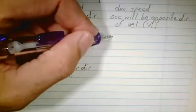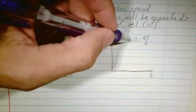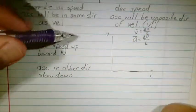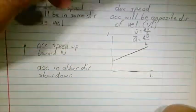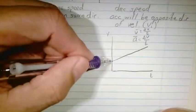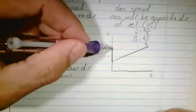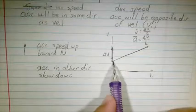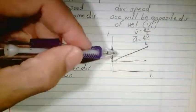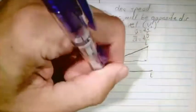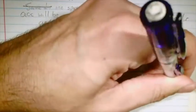Let's look at the graph of velocity versus time. We said acceleration is change in velocity over time. The change in velocity would be a vertical distance on the graph, and the time would be a horizontal distance. So change in velocity over time is just the slope. Acceleration equals the slope of a velocity versus time graph.